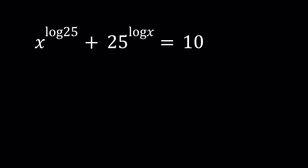So we have x to the power log 25 plus 25 to the power log x equals 10. We're going to be looking for the x values. Here, log means base 10 for those folks who think that it is the natural logarithm. But log of x basically means log x with base 10.